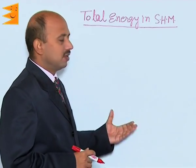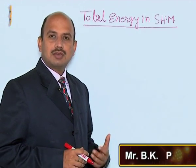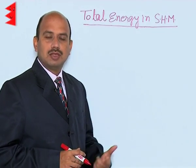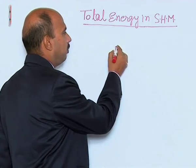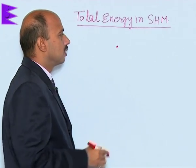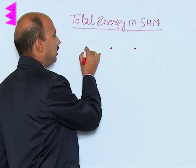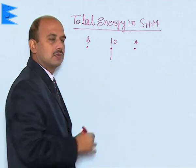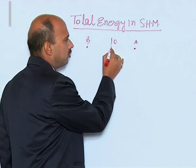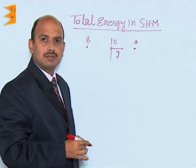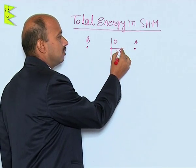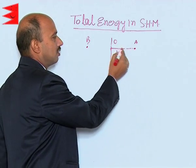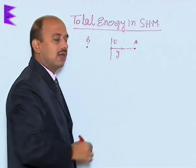Now, let's see the total energy in SHM. When a particle executes simple harmonic motion, it has got two types of energy: one is the potential energy and one is kinetic energy. Suppose there is a particle which is executing simple harmonic motion between two points A and B, and this is the mean position O. The particle is displaced by a small displacement y and maximum displacement is up to A, that is amplitude, then the particle starts executing simple harmonic motion between the two points A and B.